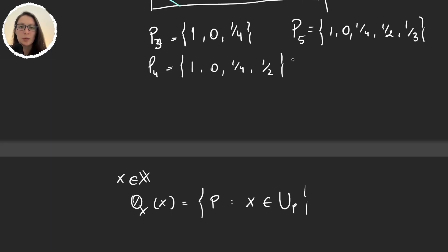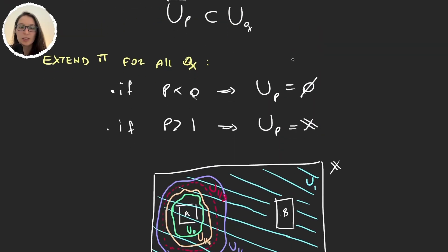Remember that when we defined this, we said that if p was smaller than 0, then U_p was going to be the empty set, and any element in the space is not an element of the empty set, so Q(x) is not going to have any rational number smaller than 0. We also said that if p was greater than 1, then U_p was going to be the whole space, and obviously any element belongs in the space, so we will have every p for p greater than 1.